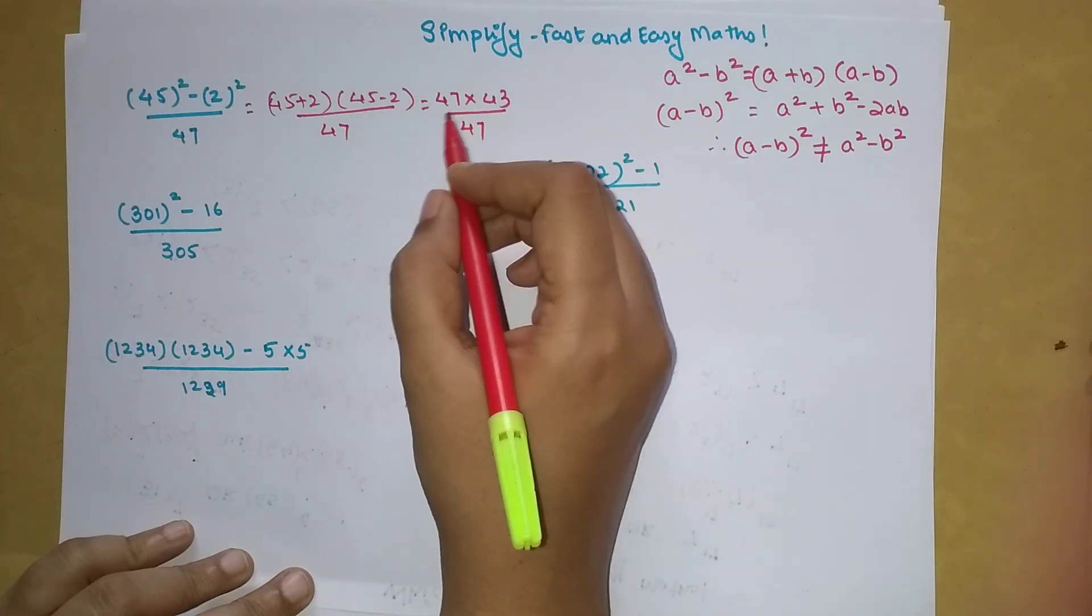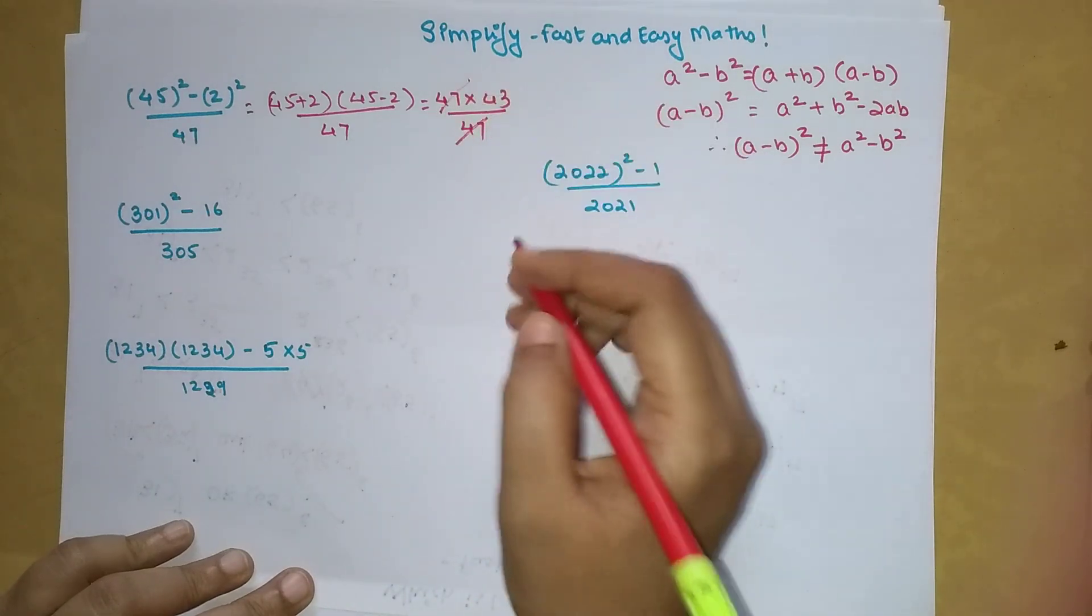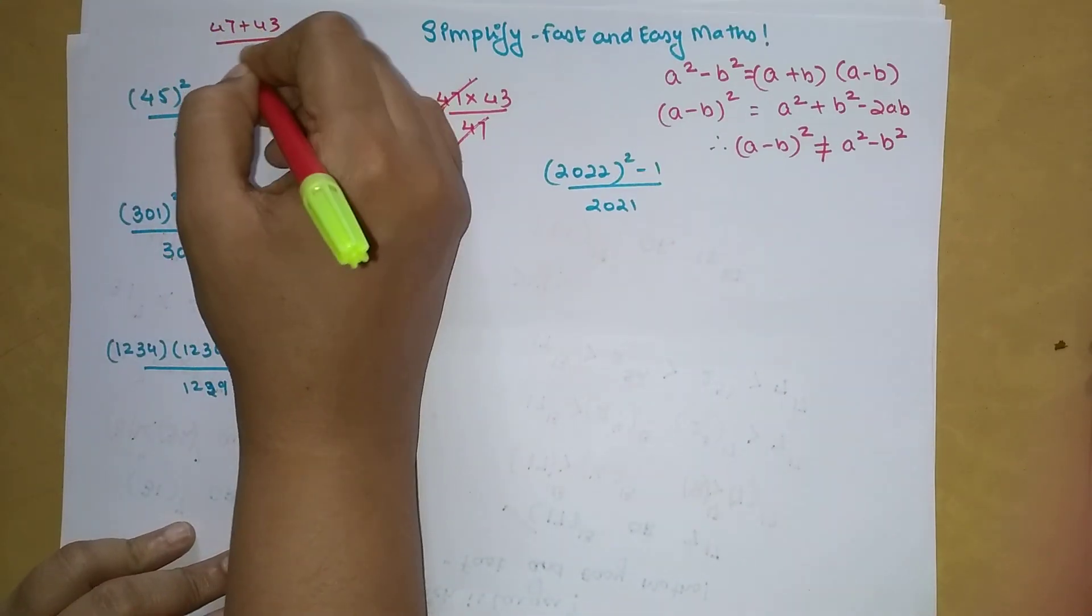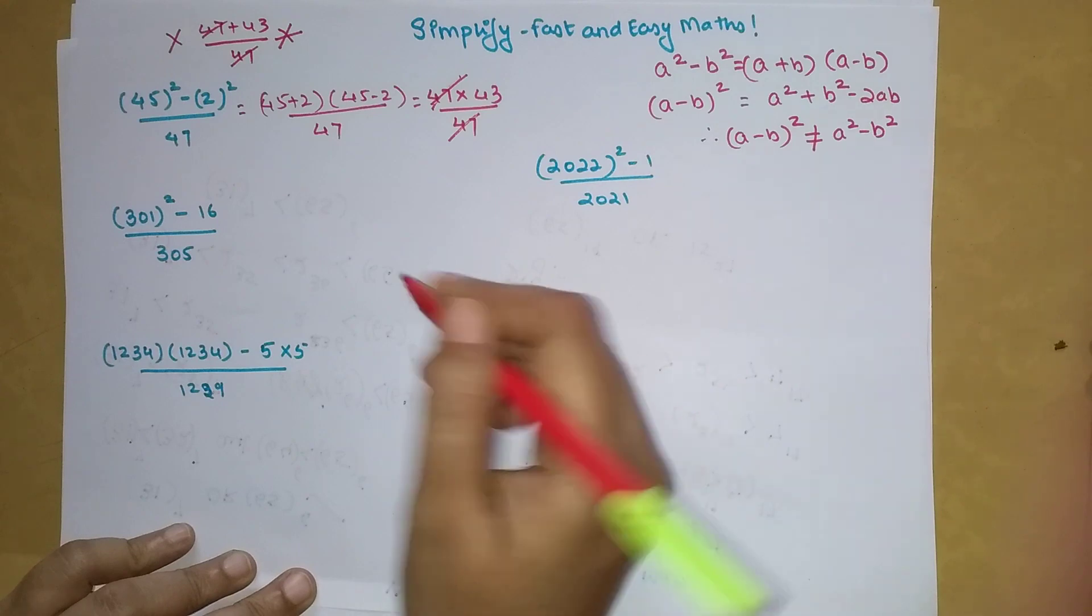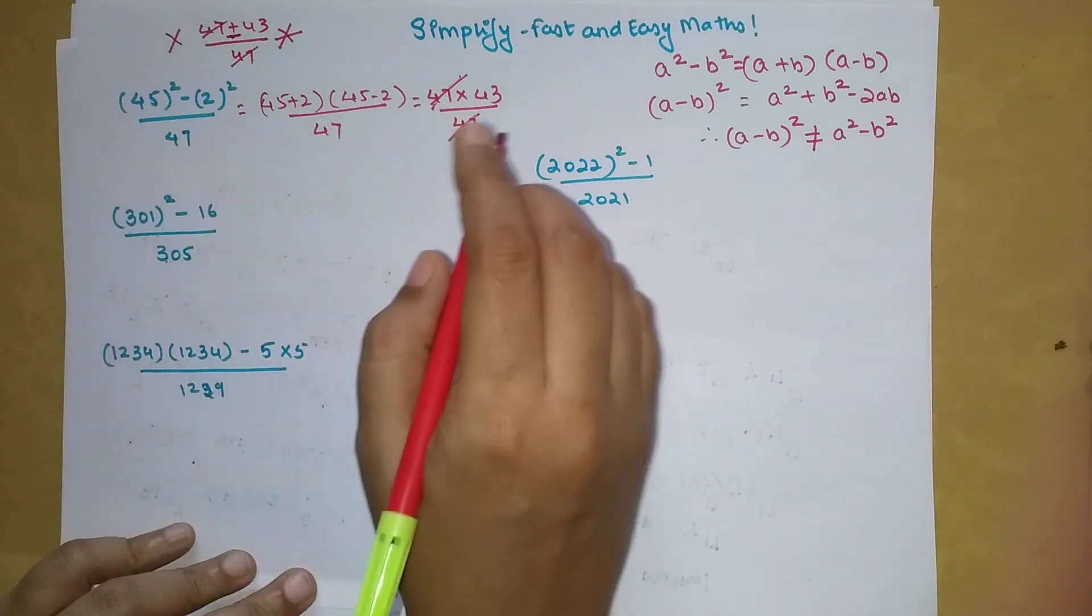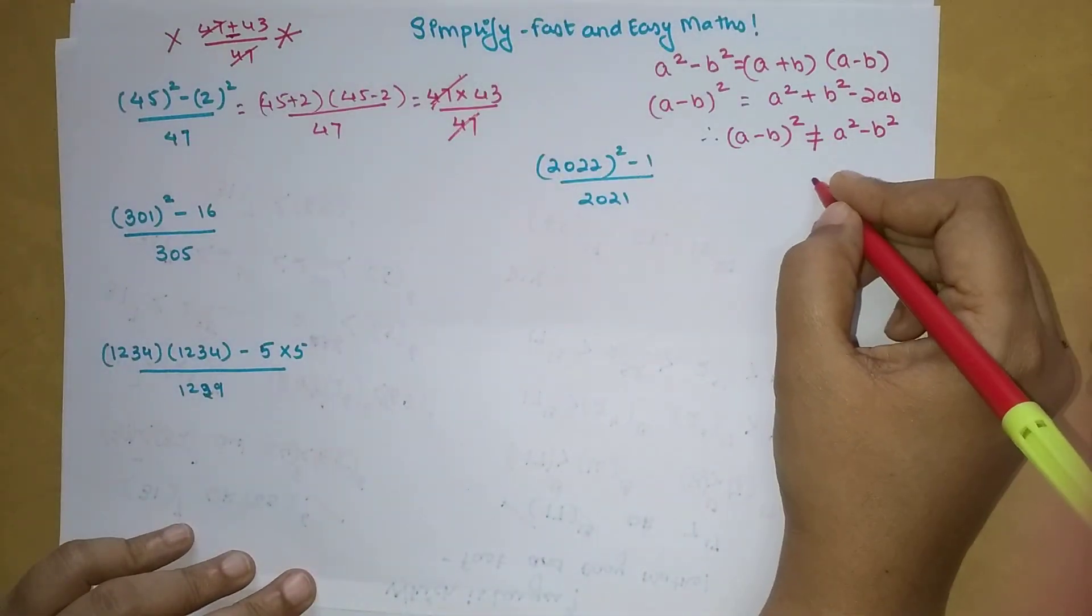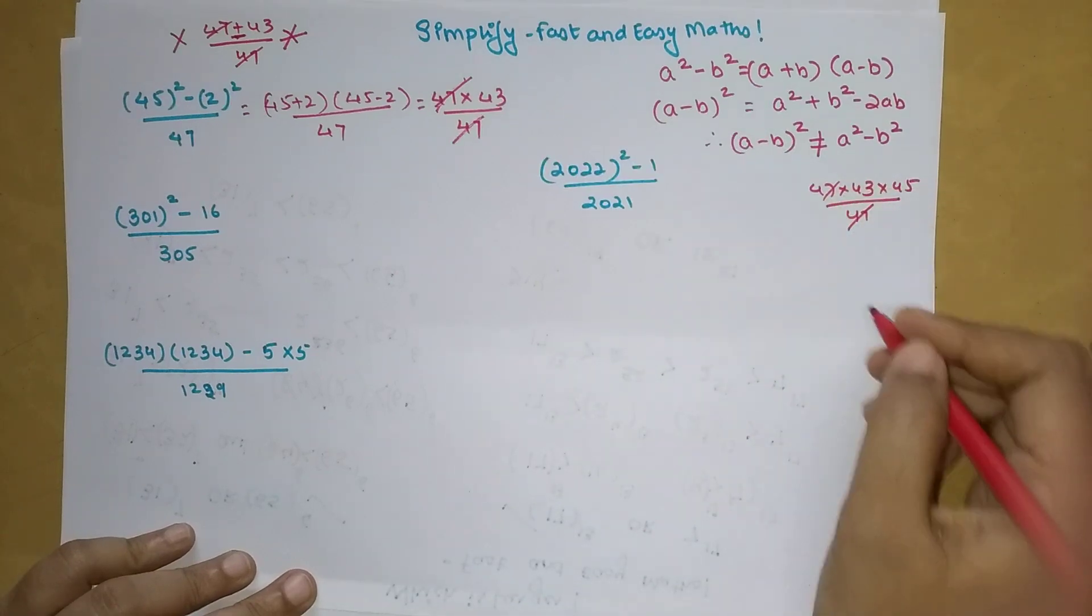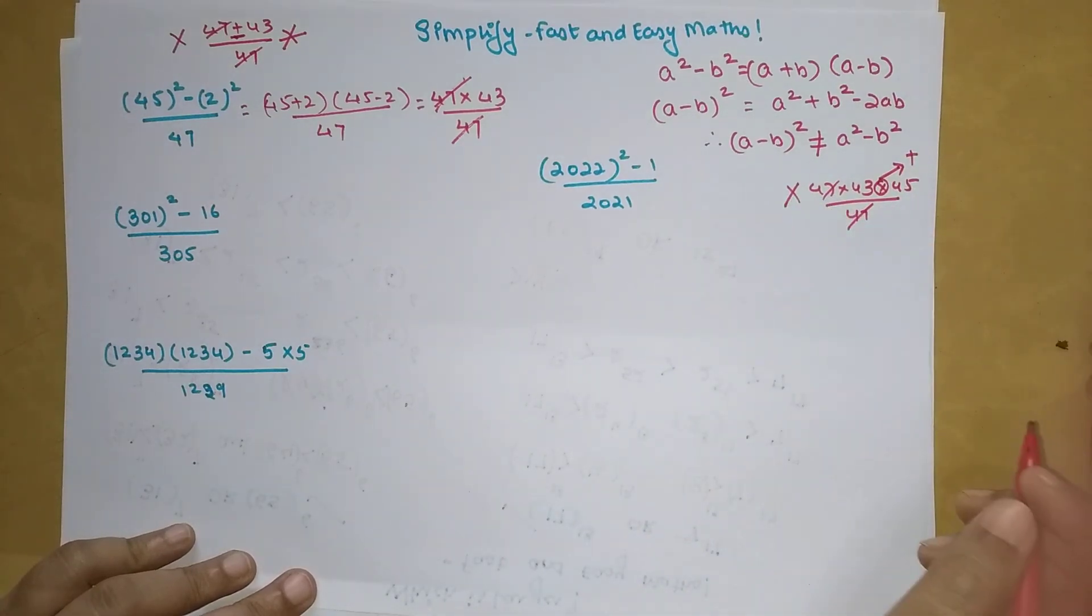Now understand students, whenever the numerator has terms which are multiplying with each other, you can directly cancel them with your denominator. A lot of my students think that if 47 plus 43 is given upon 47, you can cancel them. No, you cannot, you will get a big wrong for that. Because if there is a plus sign or a minus sign, you cannot cancel them. You can only cancel the terms if there is a product sign between all of them. So if you had 47 into 43 into 45 upon 47, then yes, you could have cancelled them. But if there was plus, then you cannot do the operation of cancellation.